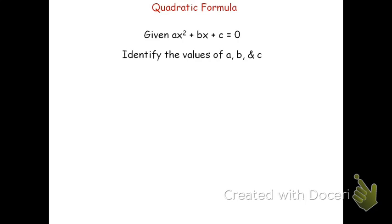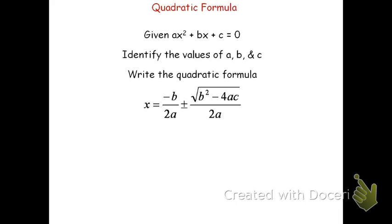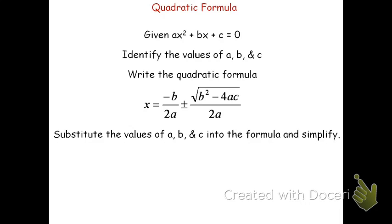Once we have the values of a, b, and c, we'll write out the quadratic formula. That formula is x equals negative b over 2a, plus or minus the square root of b squared minus 4ac, also over 2a. Once we've written the formula, we'll go ahead and substitute in our values for a, b, and c, and then simplify out the problem.